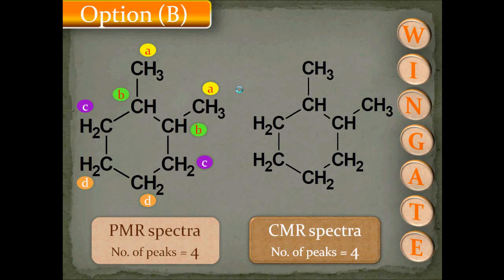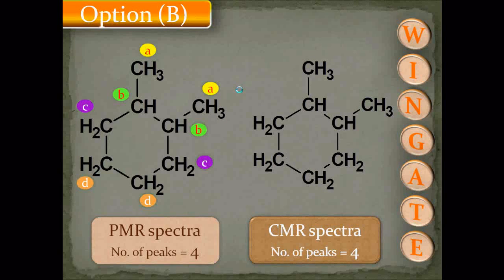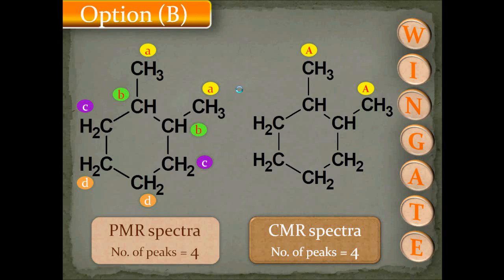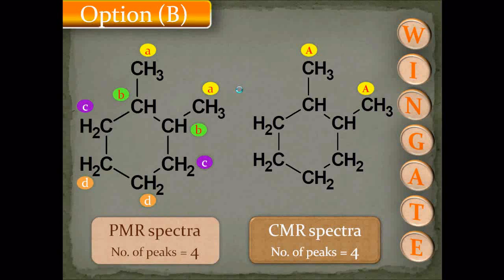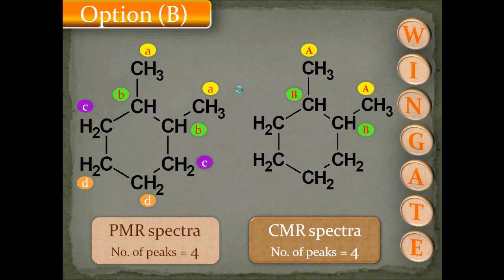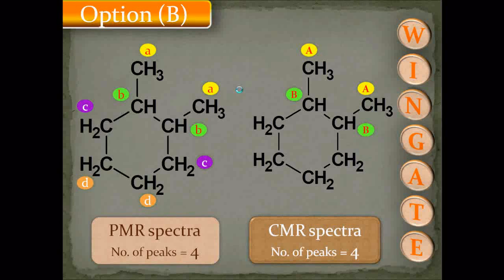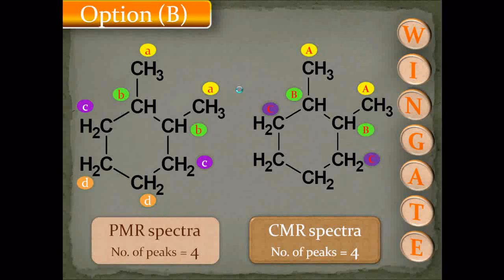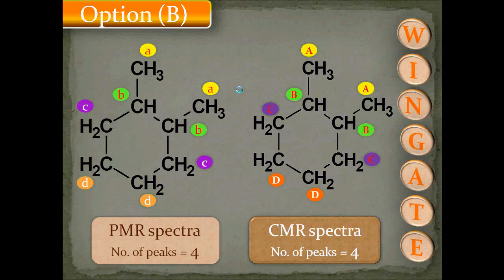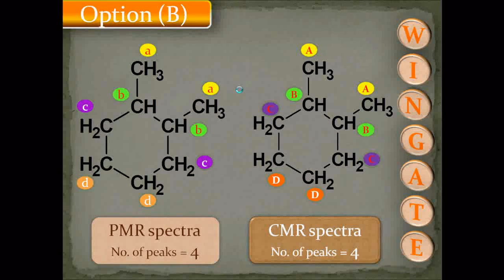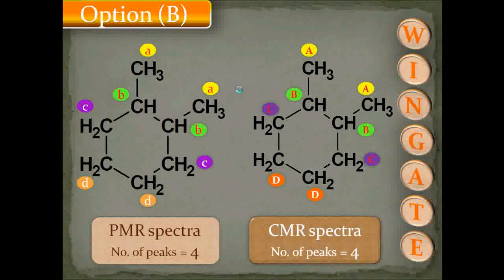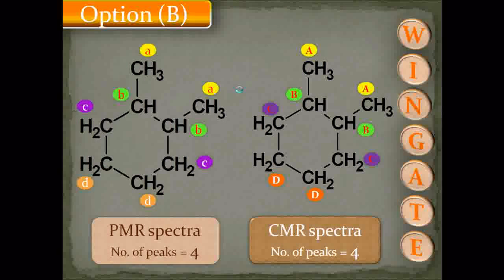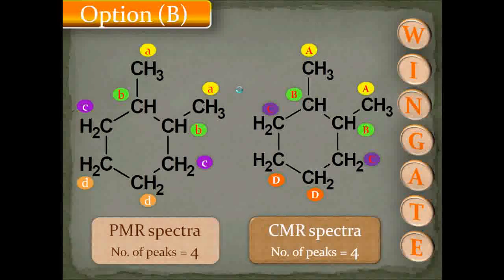The CMR spectra for the same molecule also shows 4 peaks: carbon A is in the side chain, carbon B is attached to the side chain, carbon C is ortho to the side chain, and carbon D is meta to the side chain — total 4 CMR signals. So option B is the correct answer, giving both PMR and CMR signals of 4.